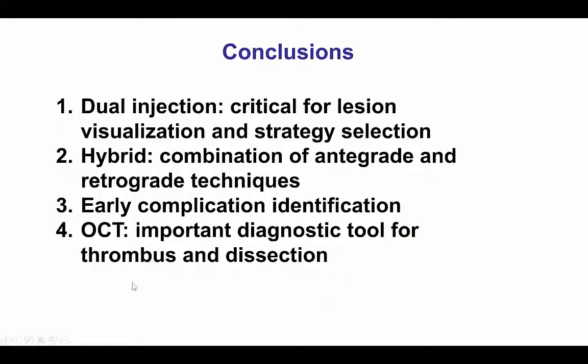There are several lessons from this case. The first is that dual injection is very important for understanding the CTO. In this case, we had two CTOs: one more proximal with favorable characteristics that was crossed with antegrade wire escalation on one limb and retrograde for the other, and the other more challenging with a blunt stump requiring use of a Confianza Pro 12 guidewire.